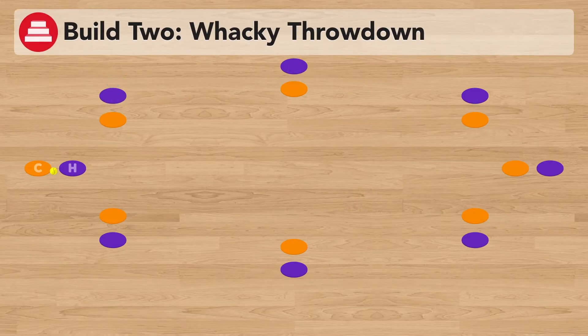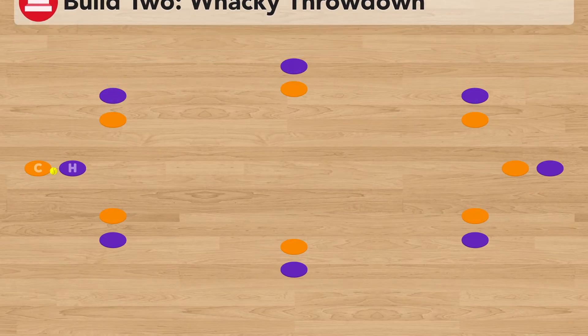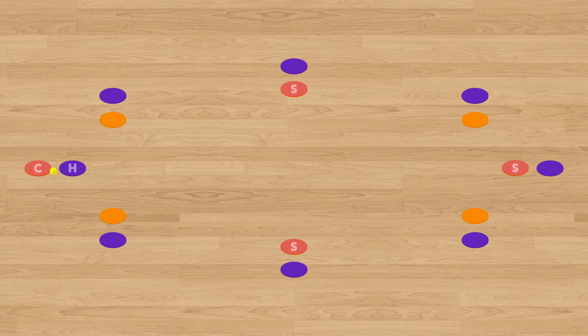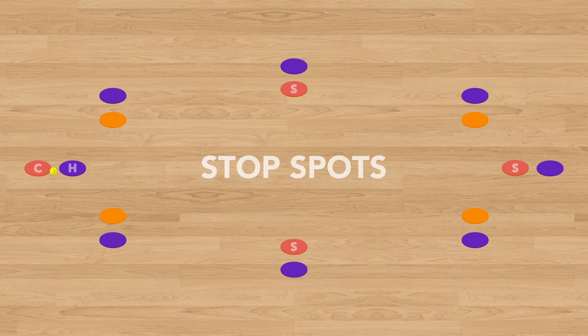Build 2 of the game is Wacky Throwdown, and before the players continue to play, the teacher will have to select a few bases that, along with the catcher's base, will serve as stop spots. The players then set up as they did before, with the first player from the batting team stepping up to home plate.